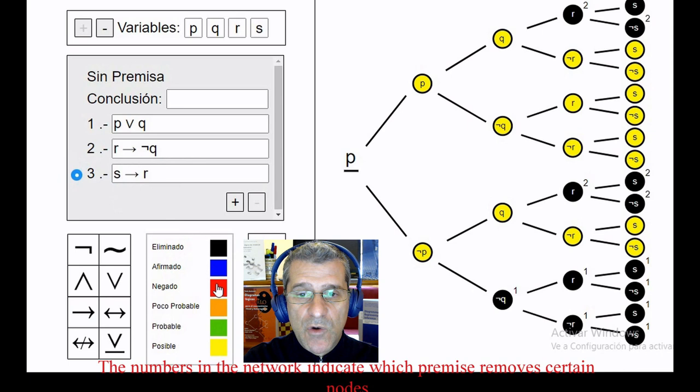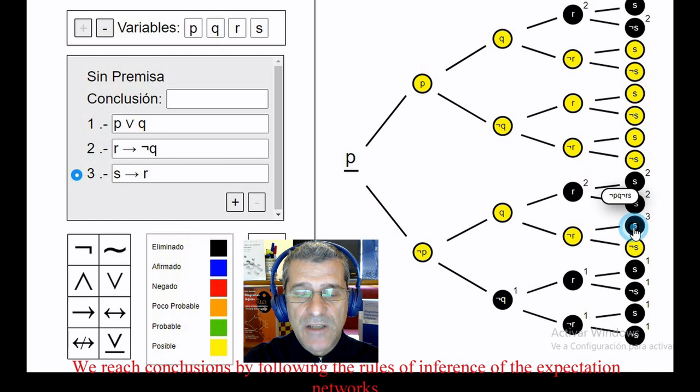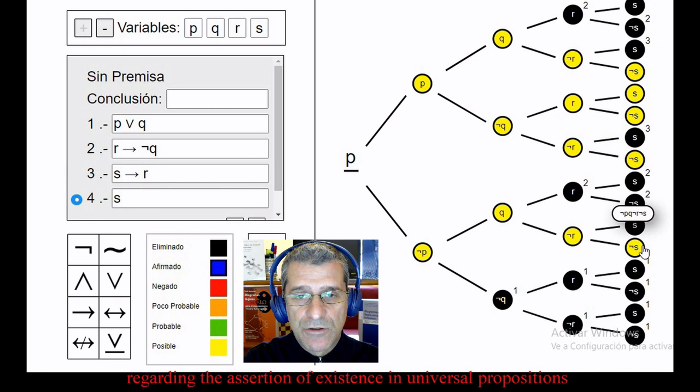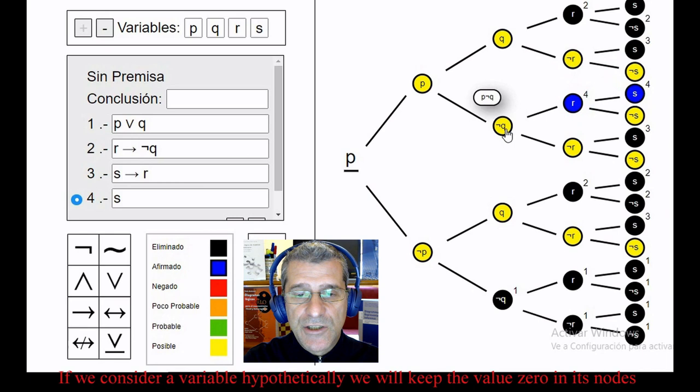Networks can conform to the conventions of mathematical logic or Aristotelian logic regarding the assertion of existence in universal propositions. If we consider a variable hypothetically, we will keep the value 0 in its nodes. If we consider that the present or the absence of a node is true here and now, we will give it a value equal to plus or minus 1.